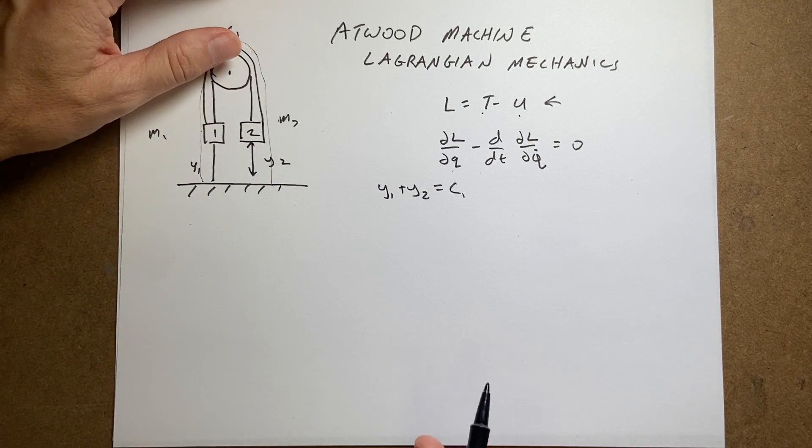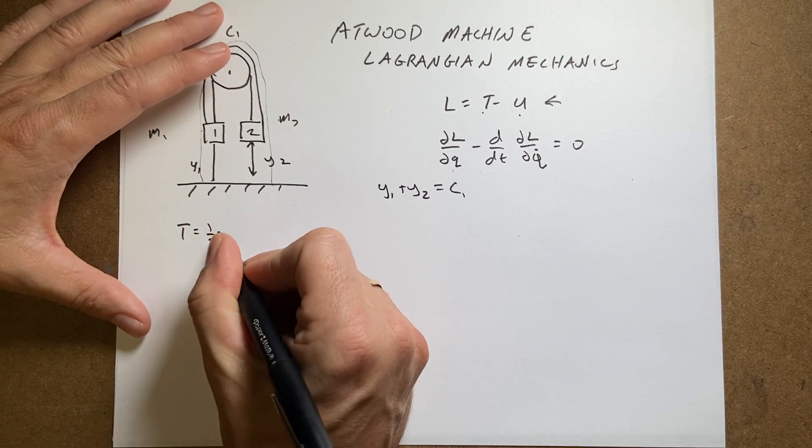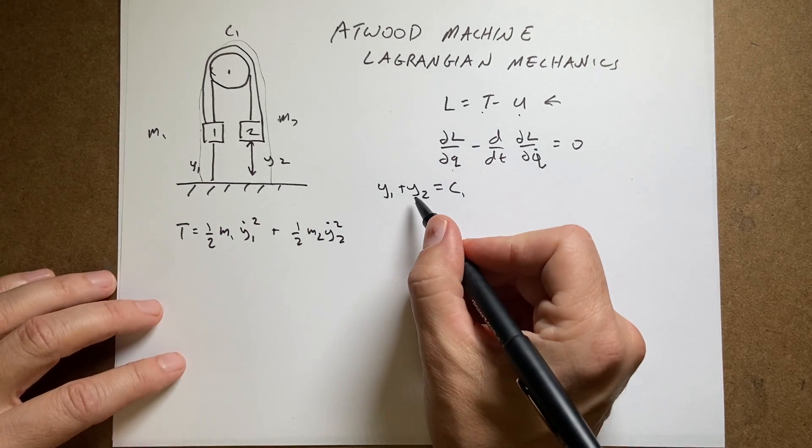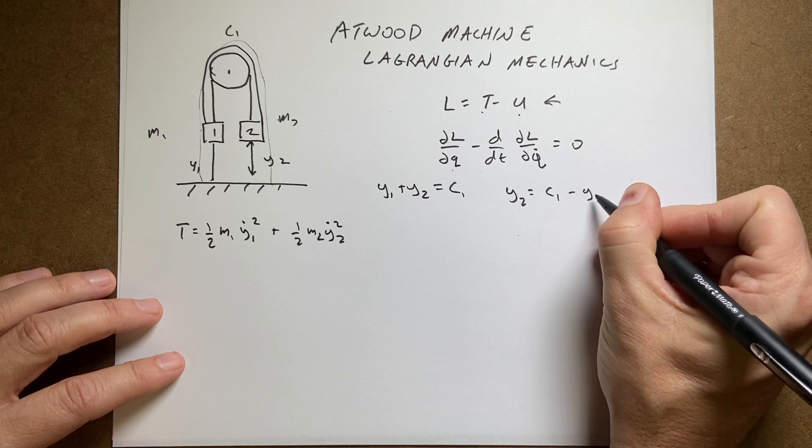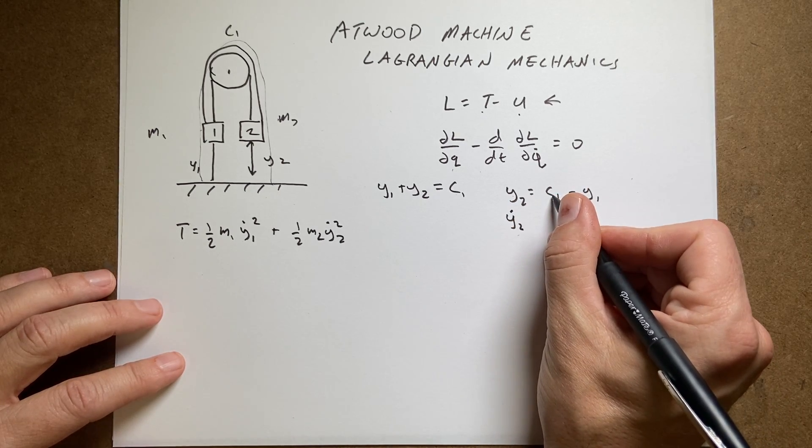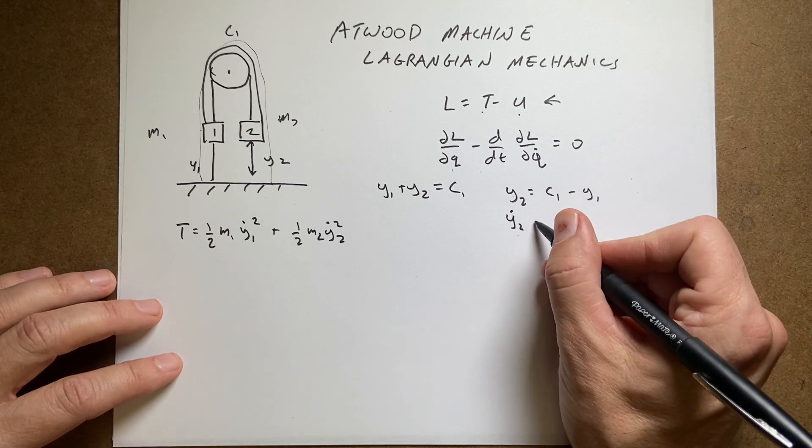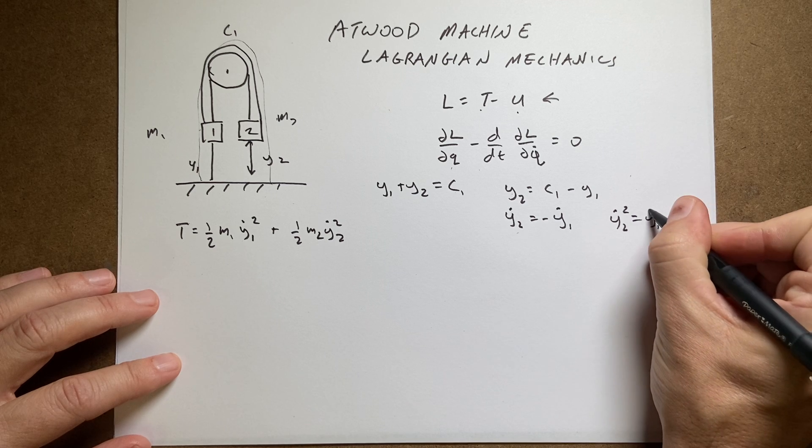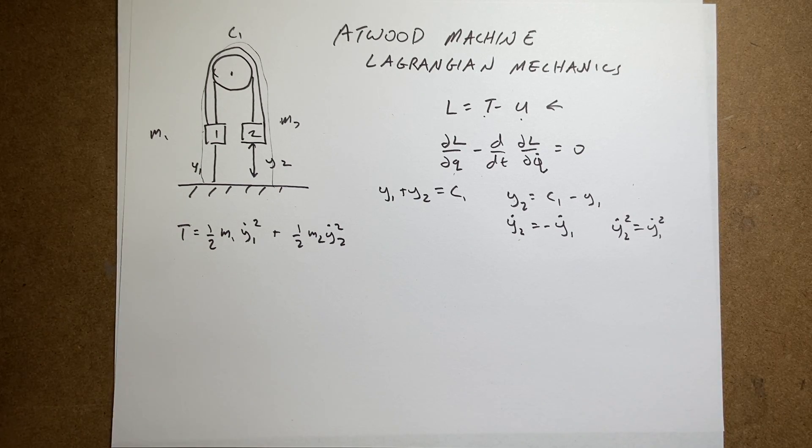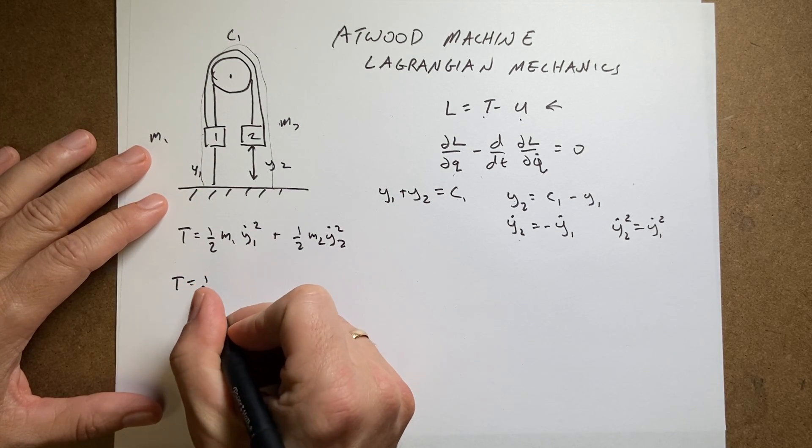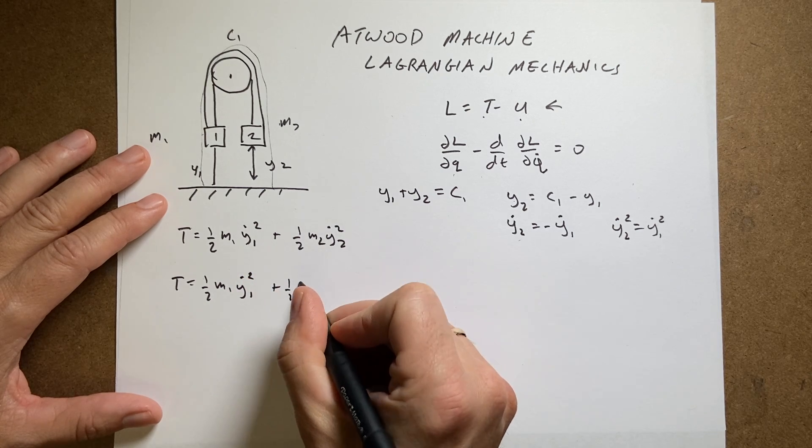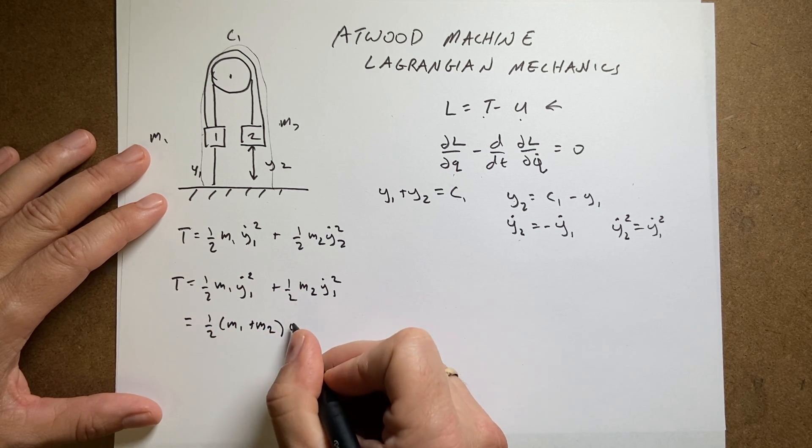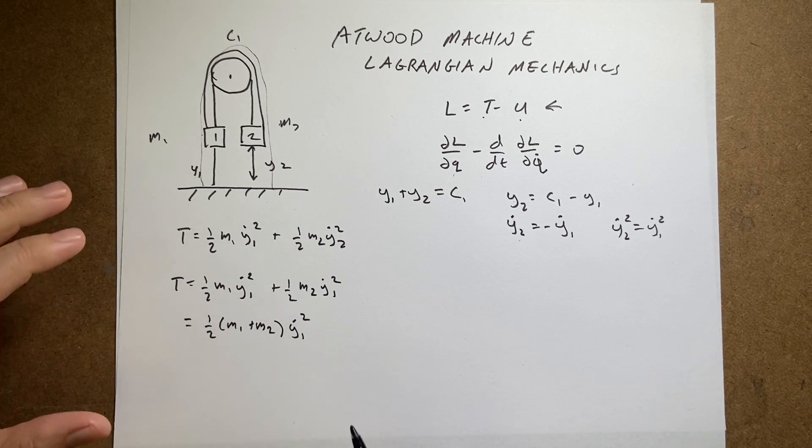Okay, so now I can write the kinetic energy. So kinetic energy is going to be T equals one half m1 y1 dot squared plus one half m2 y2 dot squared. But I only want one variable. So over here, let's solve this for y2 dot. y2 equals c1 minus y1. So y2 dot, if I take the derivative, it's going to be the derivative of c1, which is a constant, so zero, and the derivative of y1, which is going to be minus y1 dot. So if I find y2 squared, y2 dot squared is just y1 dot squared. So I can replace y2 dot squared with y1 dot squared, which you may have already known, but it's nice to do it formally. So now I can say T equals one half m1 y1 dot squared plus one half m2 y1 dot squared. So that's going to be one half times m1 plus m2 times y1 dot squared, right? Because I can factor out the y1 dot squared.